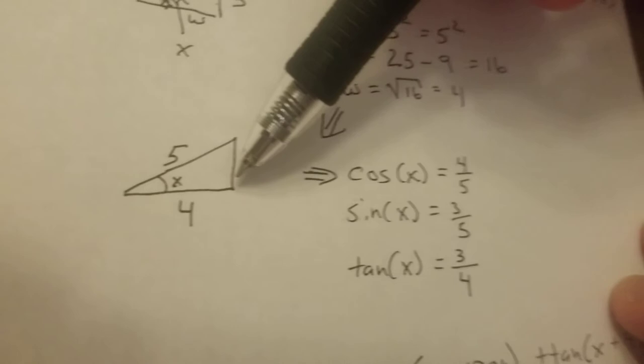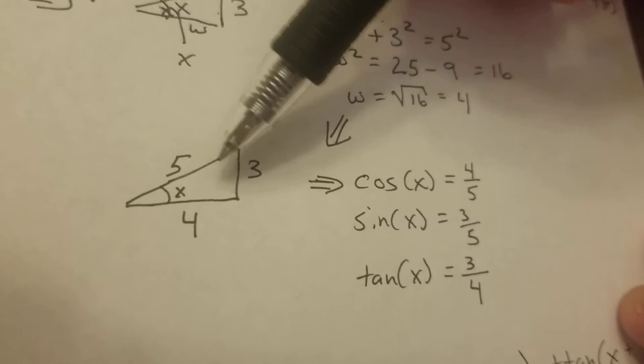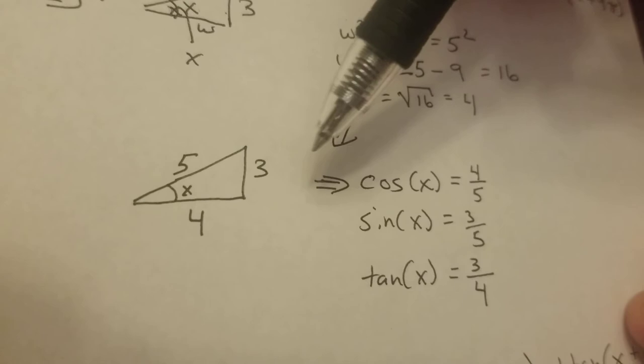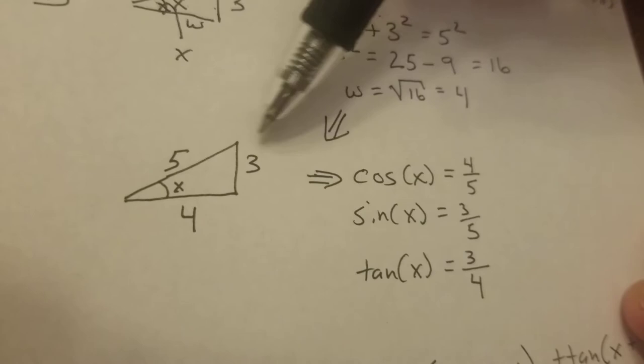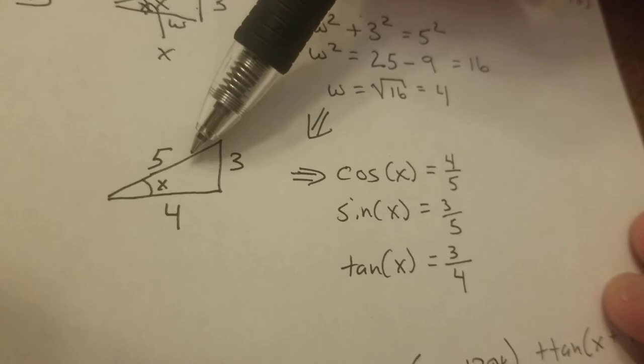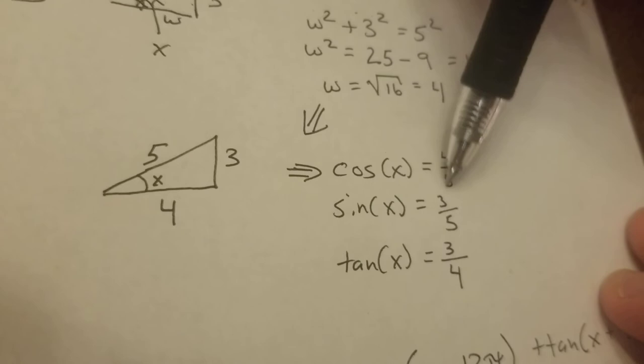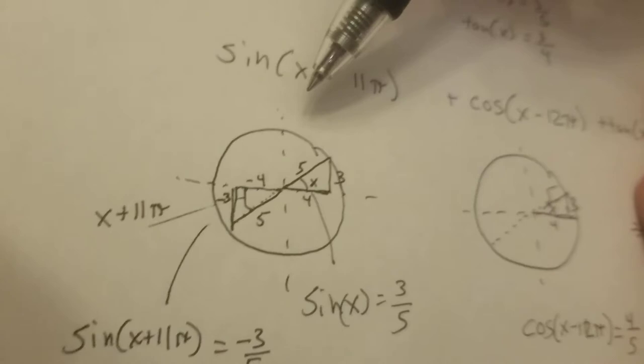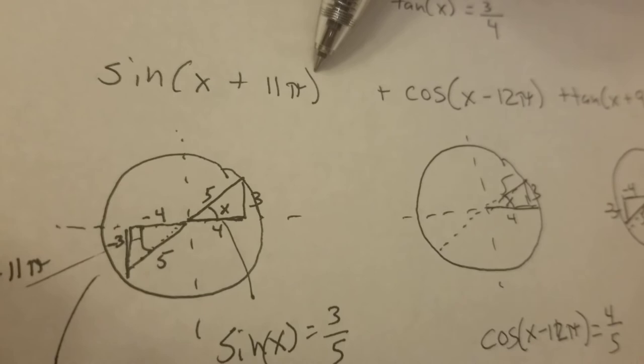So the triangle ends up being a 3, 4, and a 5. The 5 is hypotenuse, and that's where the angle is x. So the definition of sines and cosines, if you know 3, 4, and 5, the cosine of x is the adjacent over the hypotenuse, so it's 4 over 5. The sine of x they already told you is 3 over 5. The tangent is the opposite over the adjacent, 3 over 4. So let's go down to your problem here.